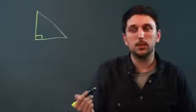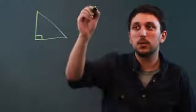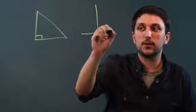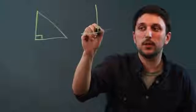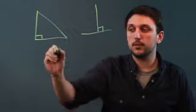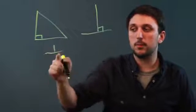Now, what does perpendicular mean? Lines are perpendicular if together they form a 90 degree angle. That's why we use this symbol for perpendicular.